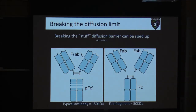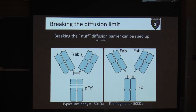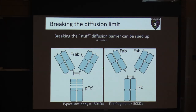There are a few things we can do to speed up diffusion — primarily, go smaller. I showed you on the opening slide that we can cut antibodies with various enzymes to create Fab2 fragments or Fab fragments. A typical antibody is about 150 kDa; a Fab fragment is about 50 kDa — a dramatic reduction in size, allowing it to diffuse through a sample much more quickly.